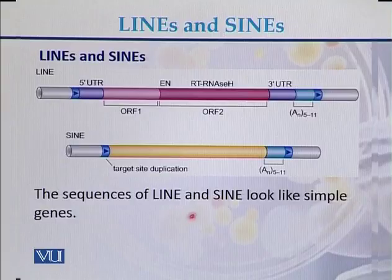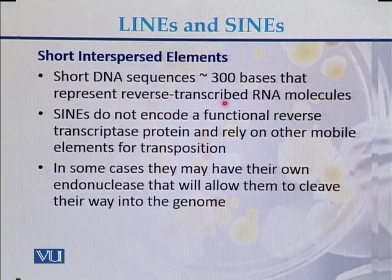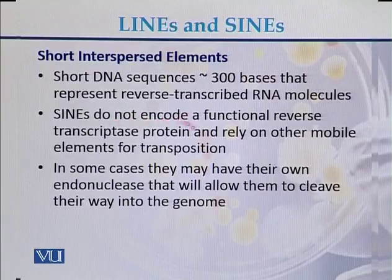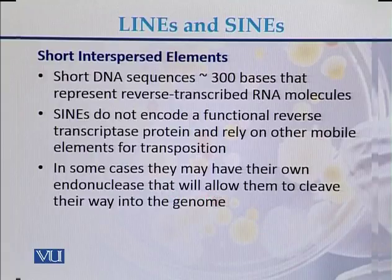The sequences of LINEs and SINEs look like simple genes. Short interspersed elements are approximately 300 base pairs in size and represent reverse-transcribed RNA molecules. SINEs do not encode a functional reverse transcriptase protein and rely on other mobile elements for transposition. In some cases, they may have their own endonucleases that allow them to cleave their way into the genome.